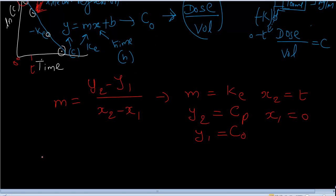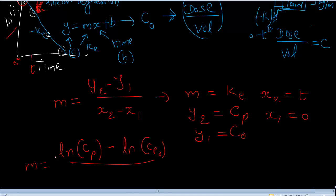Since natural log of concentration is on the y-axis, M equals ln of Cp minus ln of Cp0, over x2 minus x1, that is T minus zero. The slope is negative. The concentration Cp is lower than the initial concentration Cp0, so we end up with a negative value.